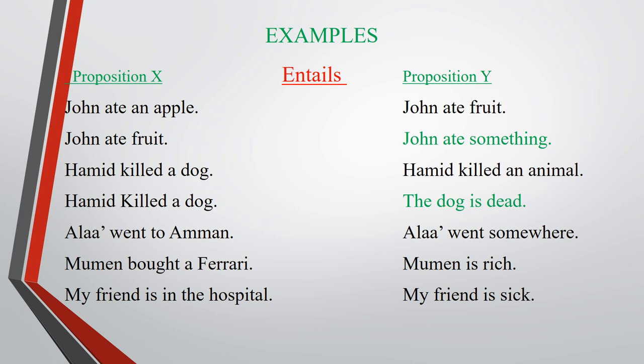Look at these examples. In the first column we have proposition X, and in the second column we have proposition Y. 'John ate an apple' entails that 'John ate fruit.' If X is true, then Y must be true. 'John ate fruit' entails that 'John ate something.' 'Hamid killed a dog' entails that 'Hamid killed an animal,' and also entails that 'the dog is dead.' 'Alaa went to Amman' entails that 'Alaa went somewhere.'